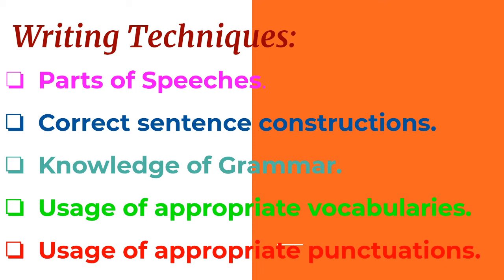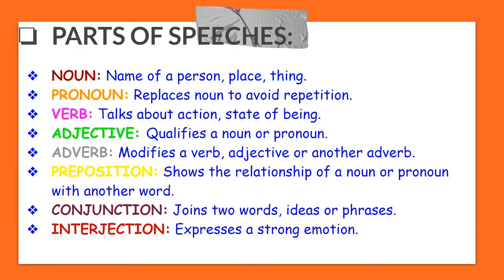Let's begin with parts of speech, then move to correct sentence constructions, knowledge of grammar, uses of appropriate vocabularies, and finally uses of appropriate punctuations. All of you know these already, but let's reflect again. Noun — name of a person, place, or thing. Pronoun — replaces a noun to avoid repetition. Verb — talks about action or state of being. Adjective — qualifies a noun or pronoun. Adverb — modifies a verb, adjective or another adverb. Preposition — shows the relationship of a noun or pronoun with another word. Conjunction — joins words, ideas or phrases. Interjection — expresses a strong emotion.